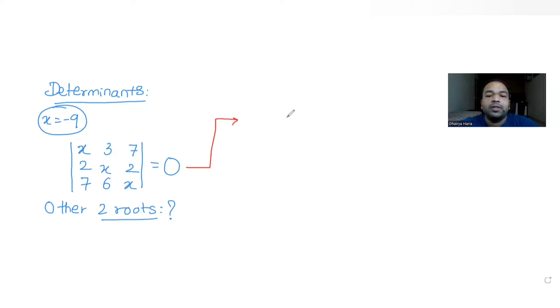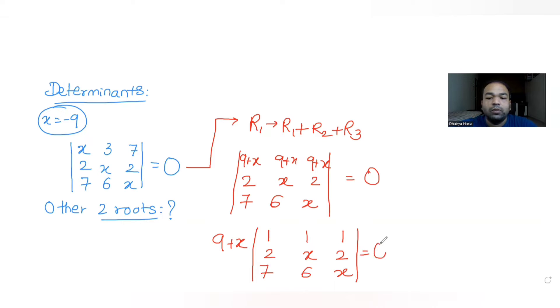So the first thing I can apply here is row transformation. If I do that, I can write that r1 changes to r1 plus r2 plus r3. So if I apply row transformation, my determinant then becomes this equal to 0. It becomes 9 plus x, 9 plus x, and 9 plus x. So every element of the first row becomes 9 plus x. After that, write the second row as it is, the third row also. Now what I can do here is I can take out 9 plus x common. So when I take out 9 plus x common, the determinant is 1, 1, 1, 2, x, 2, and 7, 6, x that equals 0.